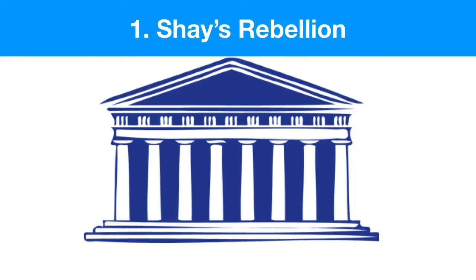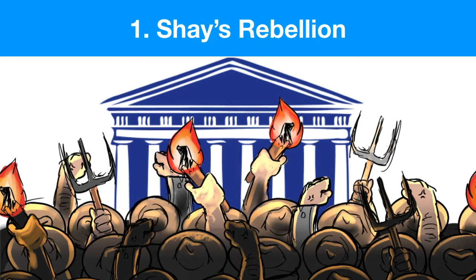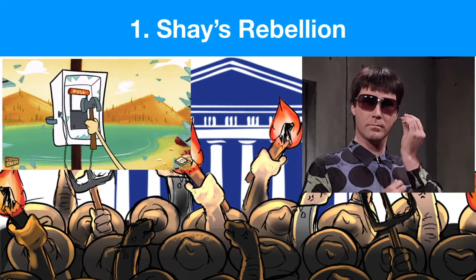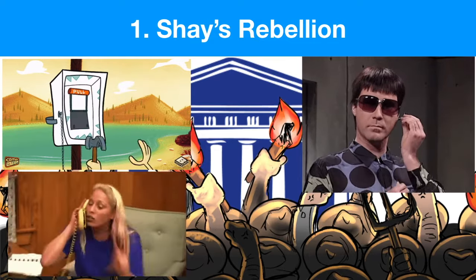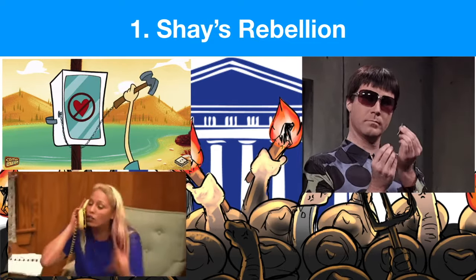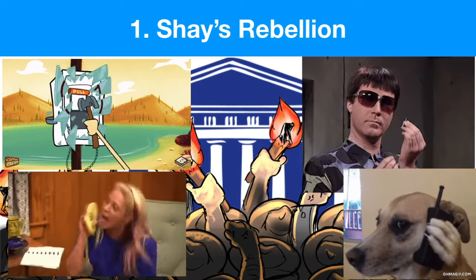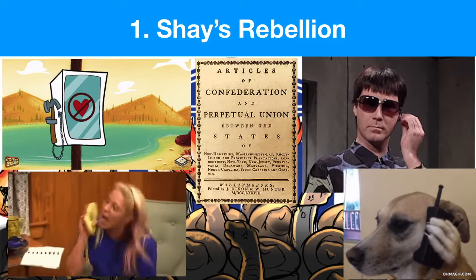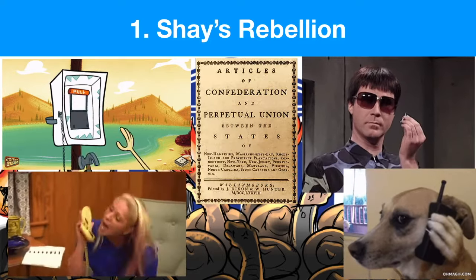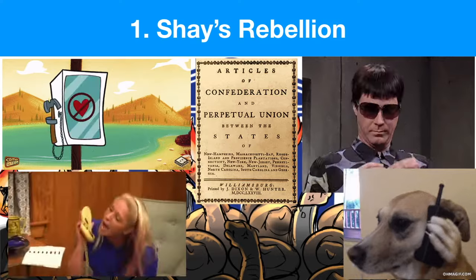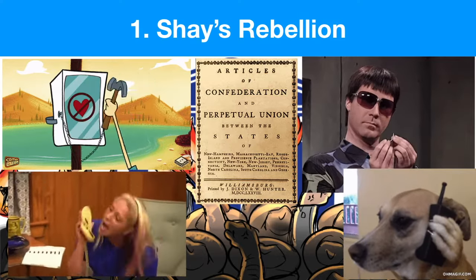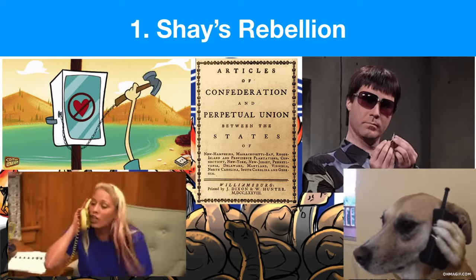So together, these angry farmers stormed the courthouse of Massachusetts and occupied it. The government workers in the courthouse sounded the emergency alarm, pulled out their tiny phones, and screamed into the receiver, 'Help! We have somebody here trying to take over the courthouse!' And then they patiently waited. As they waited, they realized there's no one coming — our government under the Articles of Confederation can't fund a military. Eventually, this threat had to be put down by a private volunteer military rather than the government itself.